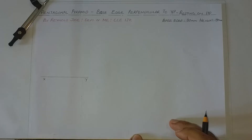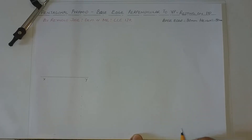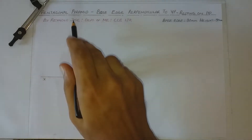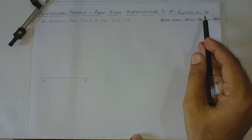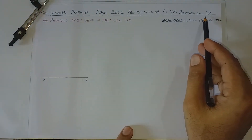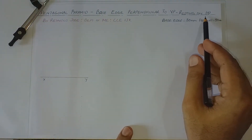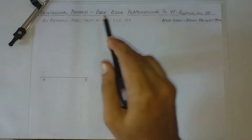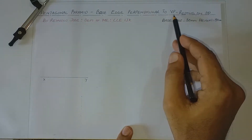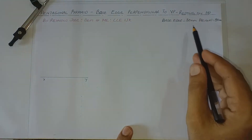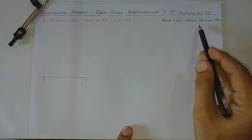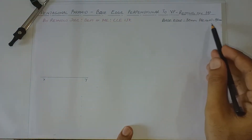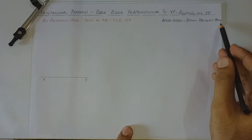Let us see how to draw the symbol position of a pentagonal pyramid when it is resting on HP on its base, such that one of the base edges is perpendicular to VP. Base edge length is given as 30 mm and height is given as 80 mm.